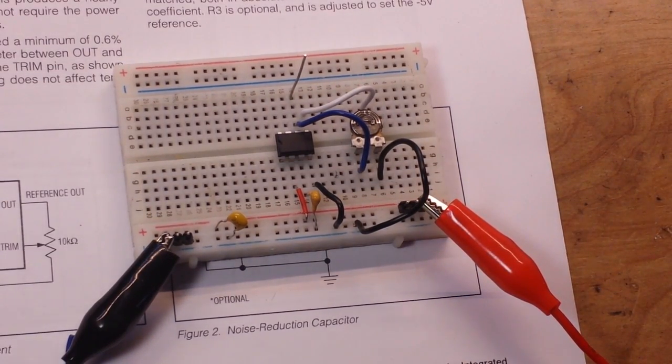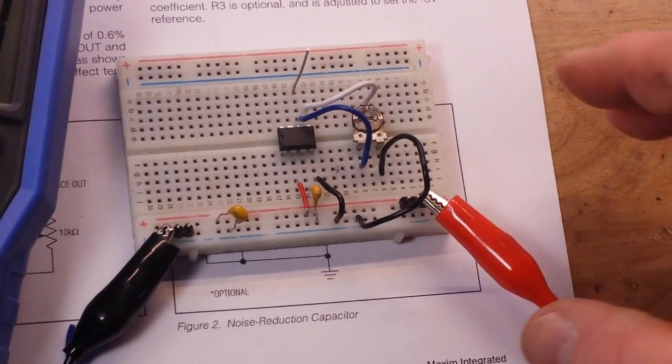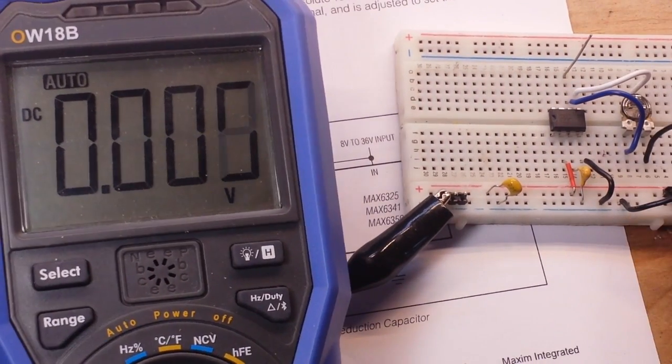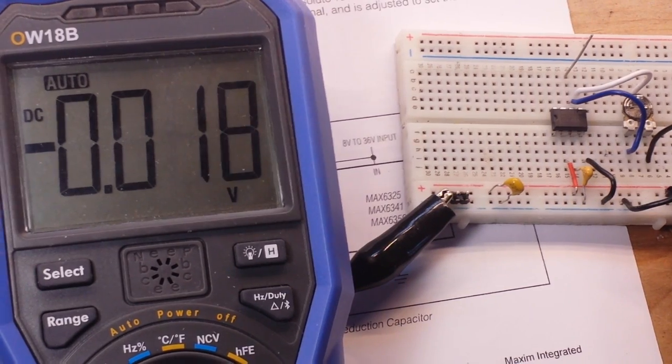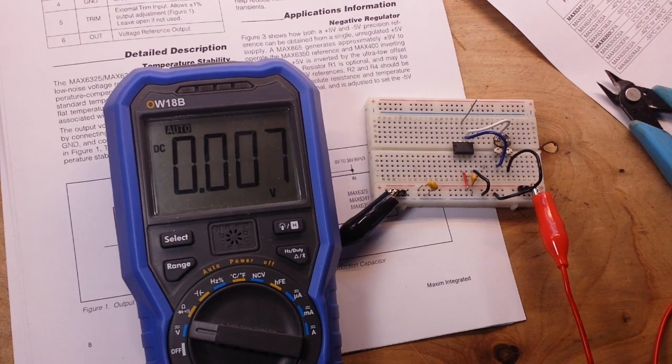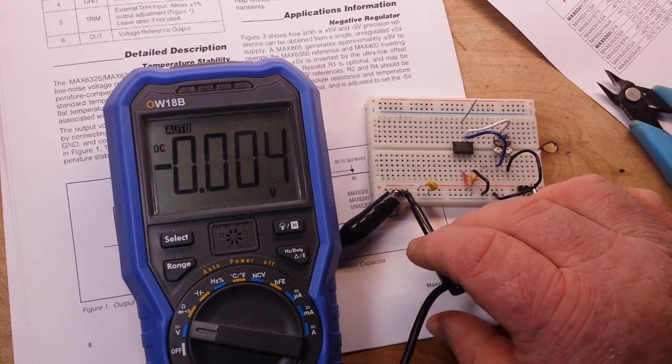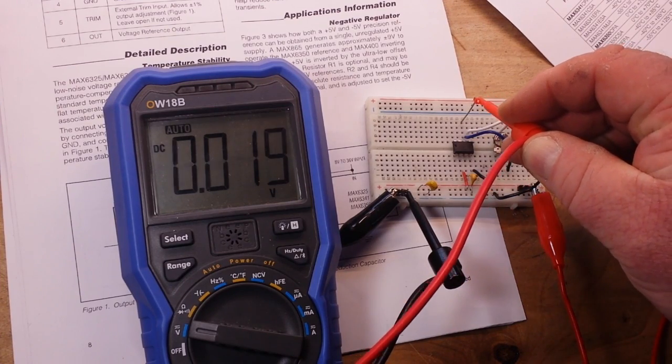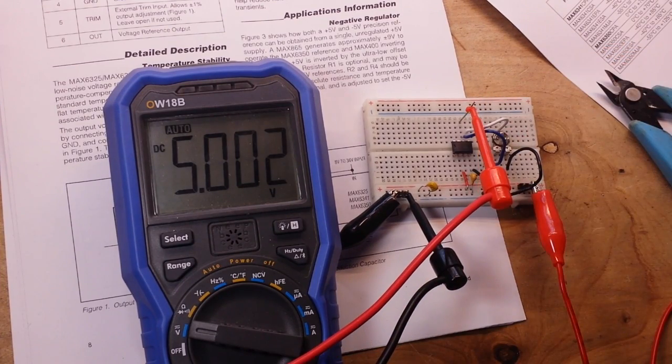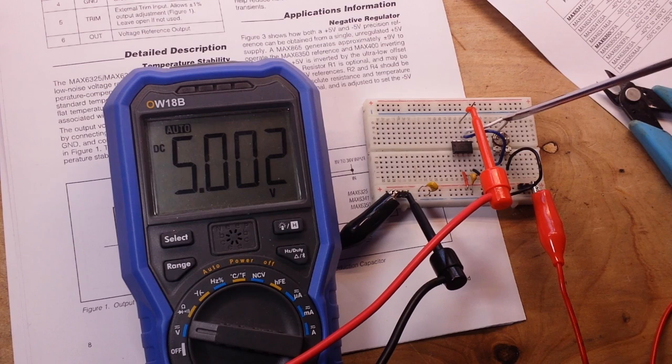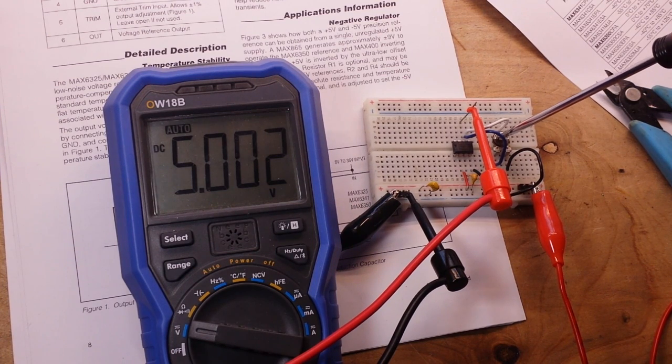And we'll hook up our power supply, ground first, then our positive. And we'll bring in a meter. Today's meter flavor will be the 0118B. Let me zoom out a little bit here so you can see the whole picture. I'm going to clamp on our ground here and our positive goes here. 5.002.